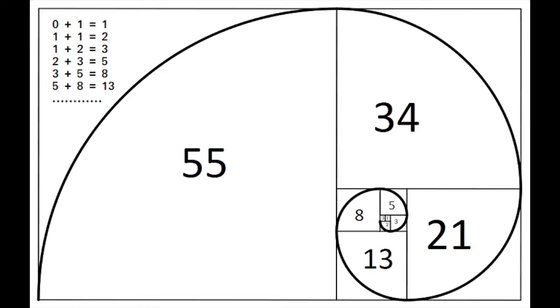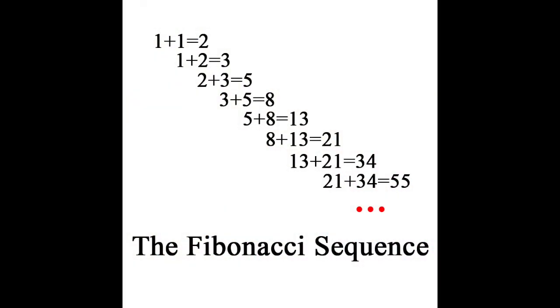The Fibonacci sequence starts like this: 0, 1, 1, 2, 3, 5, 8, 13, 21, 34, 55, and so on. The way we work this out is each number is the sum of the two numbers that precede it. For example, 1 plus 1 equals 2, 1 plus 2 equals 3, 2 plus 3 equals 5.